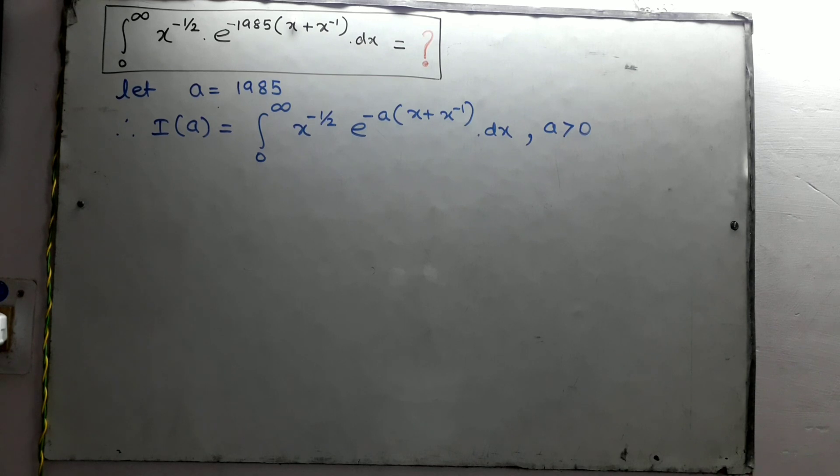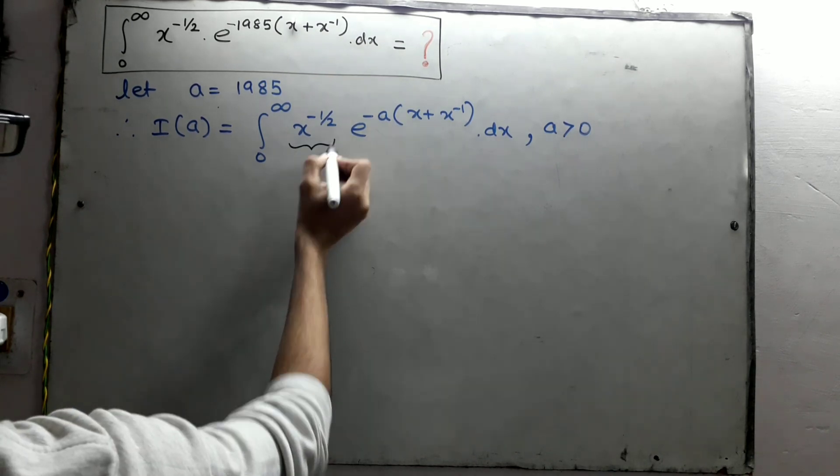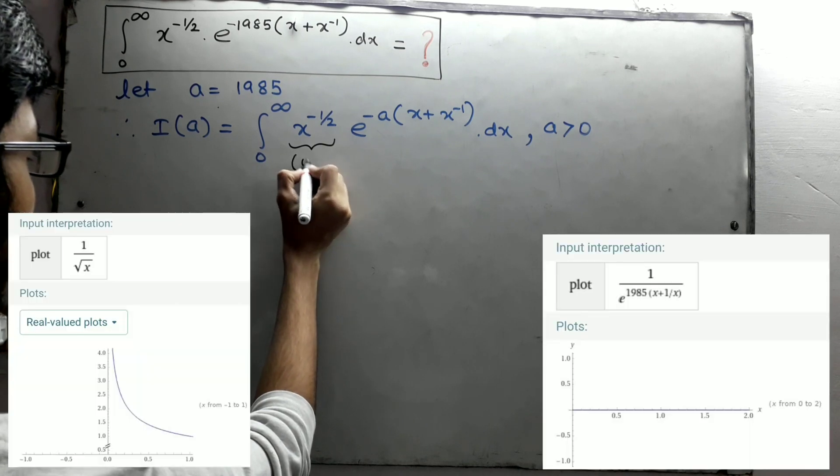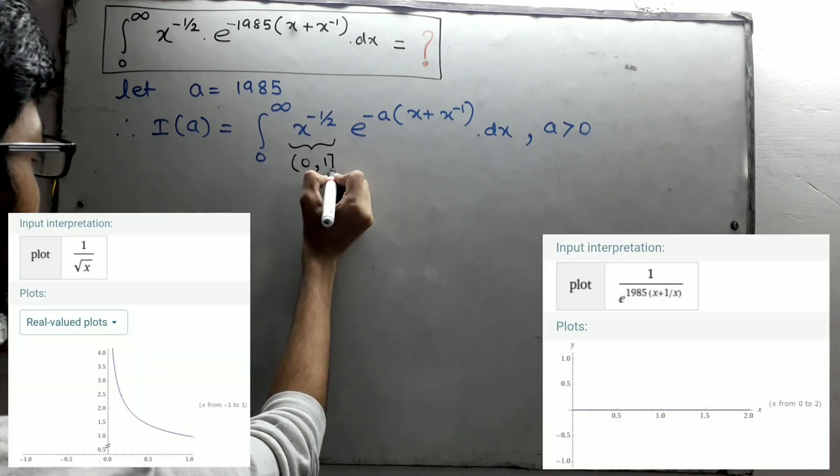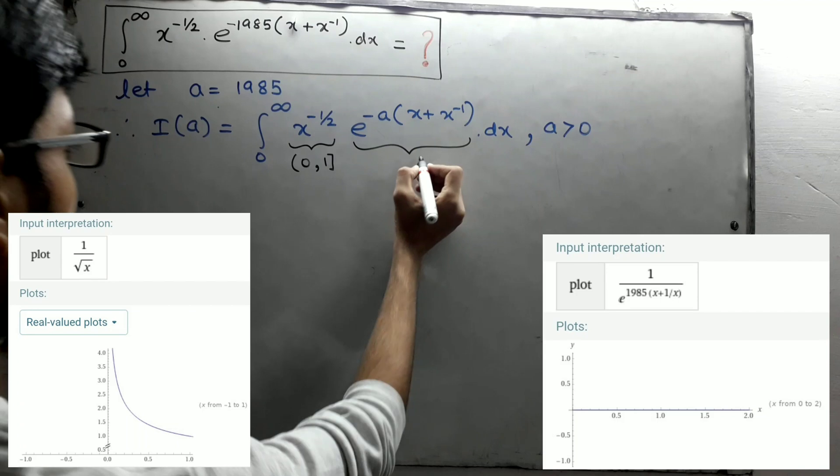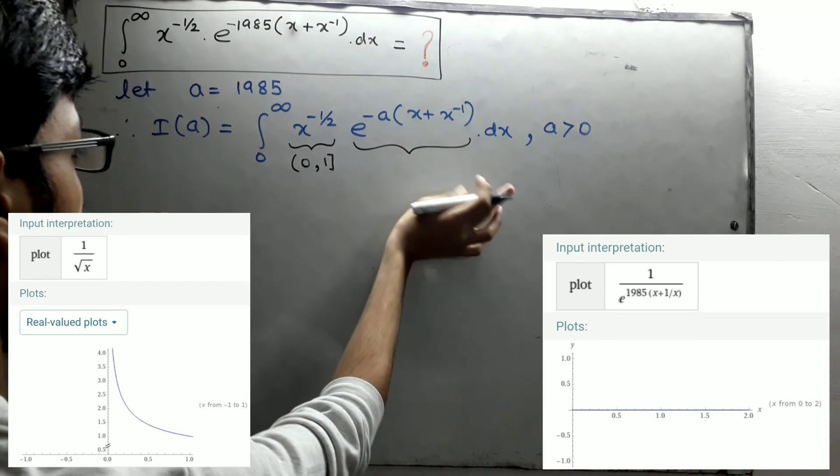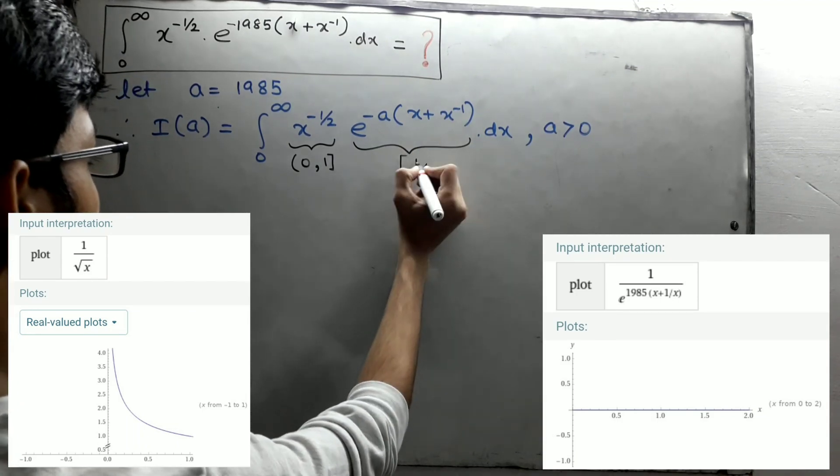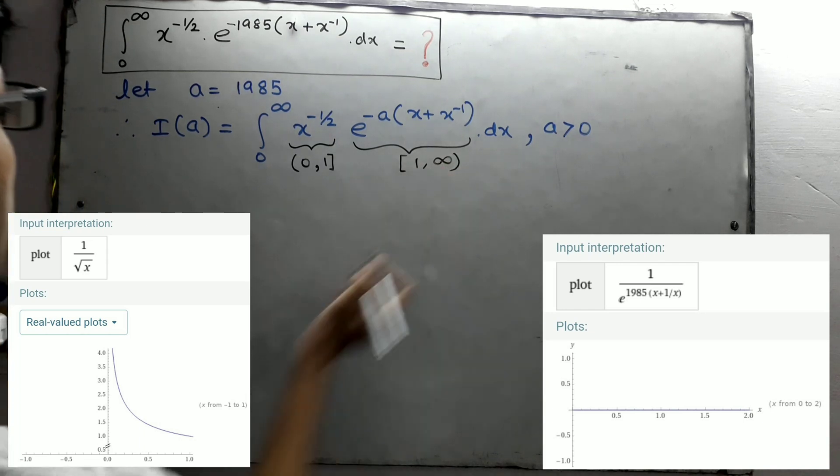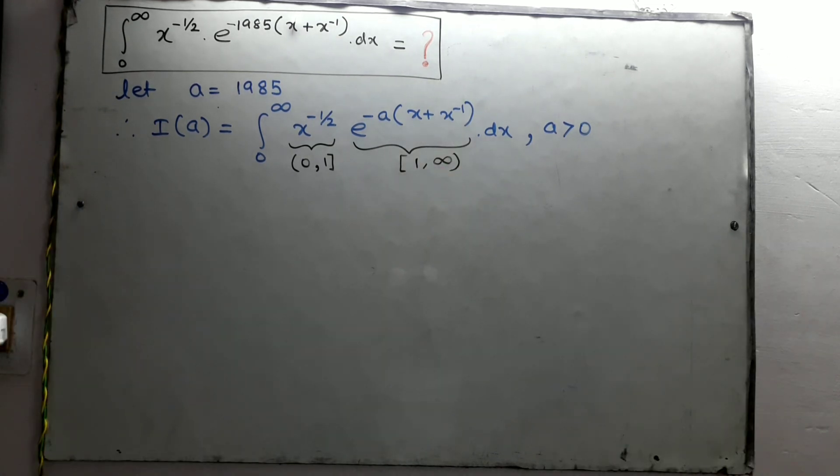As we know, these two functions are continuous functions in 0 to infinity. That means the integral is converging since the integral is bounded by x to the power of half on 0 to 1 and by the exponential function on 1 to infinity. So now we can write this integral into two different integrals.